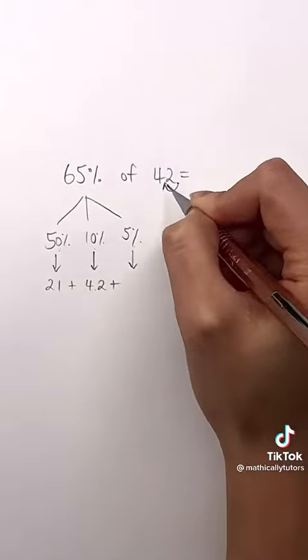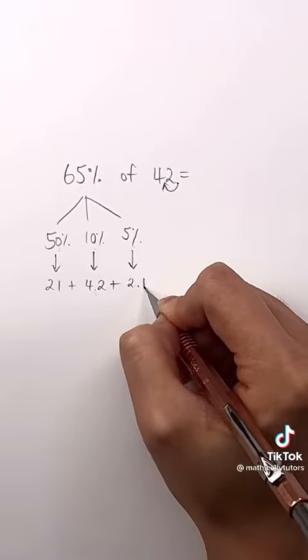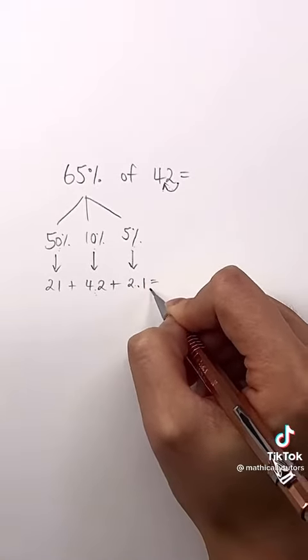Well, 5% is half of 10%, and so what is half of 4.2? Right, 2.1. And so if we add them all together, we get our answer.